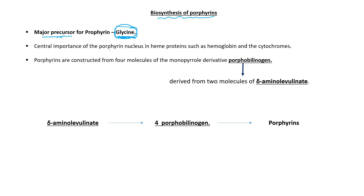Talking about the central importance of the porphyrin nucleus: porphyrin is involved in heme proteins, and the best example of heme proteins is hemoglobin and cytochromes. So hemoglobin and cytochromes are heme proteins in which the porphyrin nucleus is present.